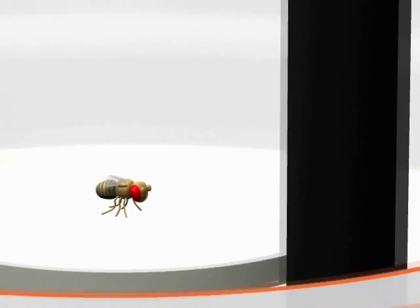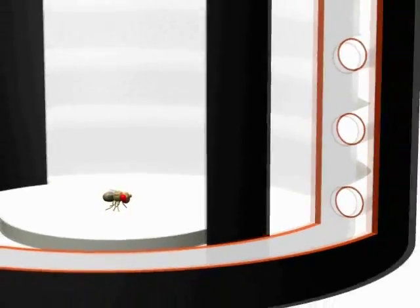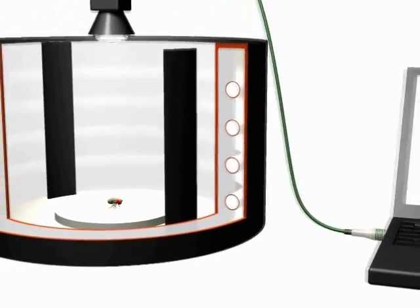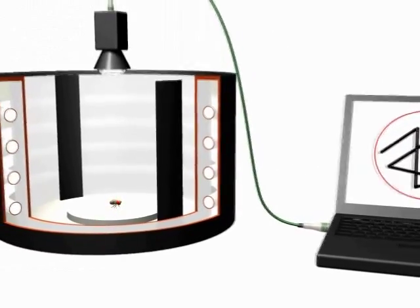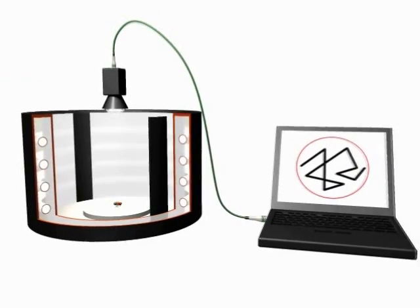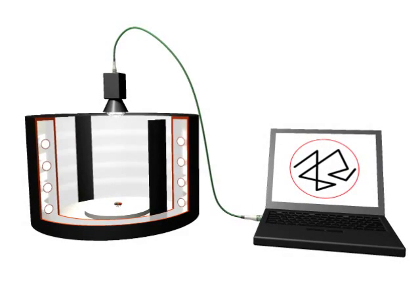The flies walk on a platform surrounded by water, in the presence of two black stripes mounted on the brightly lit walls surrounding the platform.